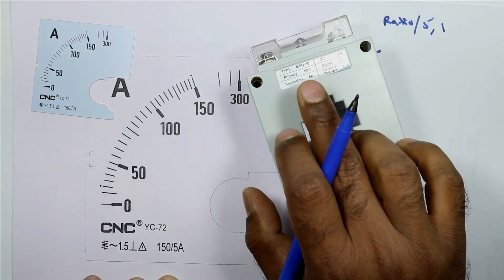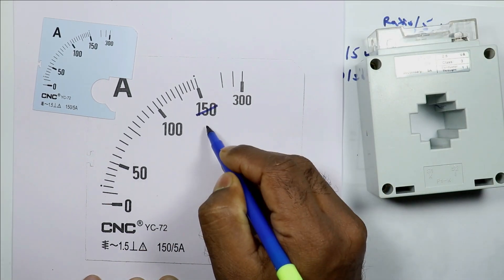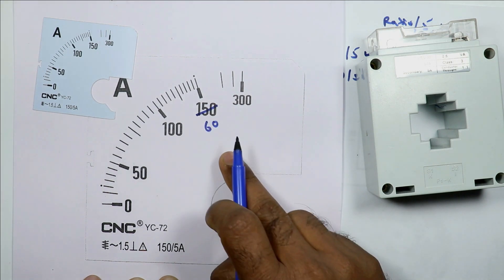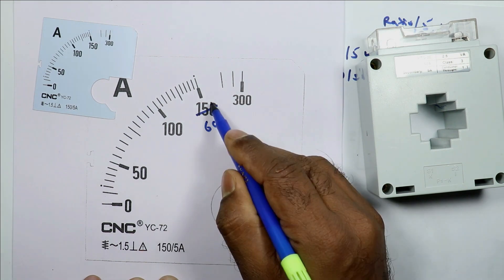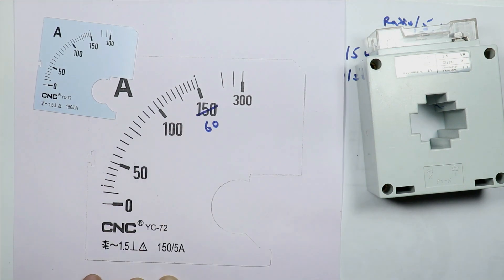Right now ratio of CT is 60, so I am writing 60 here. If pointer aims at this point then we will consider this as 60 ampere current, not 150. For the below mentioned range we need to do some calculation to change this.